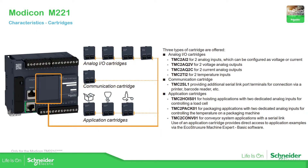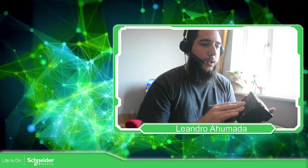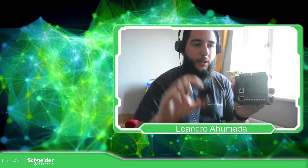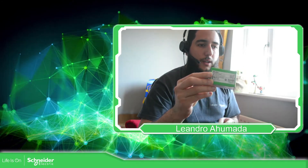The next feature is the cartridge. On the front of the Modicon M221 we have the possibility to use a cartridge. There are different cartridges available: one for communication, one for analog I/Os, and software application cartridges. You can remove the cartridge slot cover and insert one — for example, this one is for serial line communication.